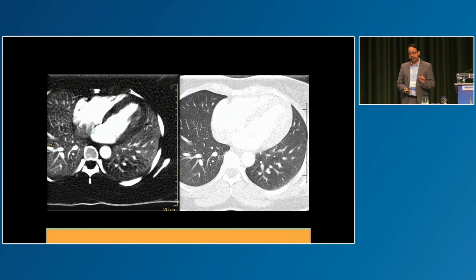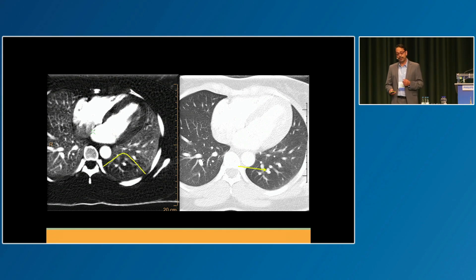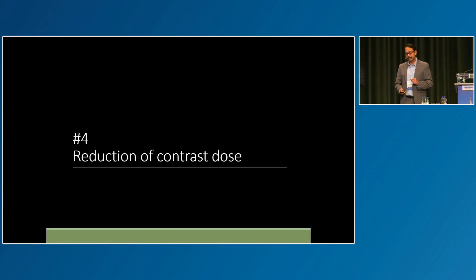One physiologic phenomenon you need to be aware of is the Euler-Liljestrand mechanism, or pulmonary hypoxic vasoconstriction. You see a perfusion defect in the left lower lobe — that's because of a mucus plug in the left lower lobe bronchus.